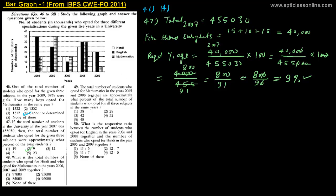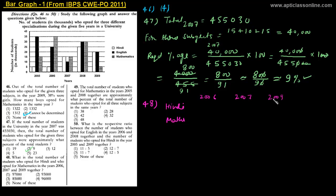Let's go ahead with question number 48. The question reads: What is the total number of students who opted for Hindi and who opted for Mathematics in the years 2006, 2007, and 2009 together? This is a straightforward question — we have to add the number of students in those three years for two different subjects: Hindi and Mathematics.